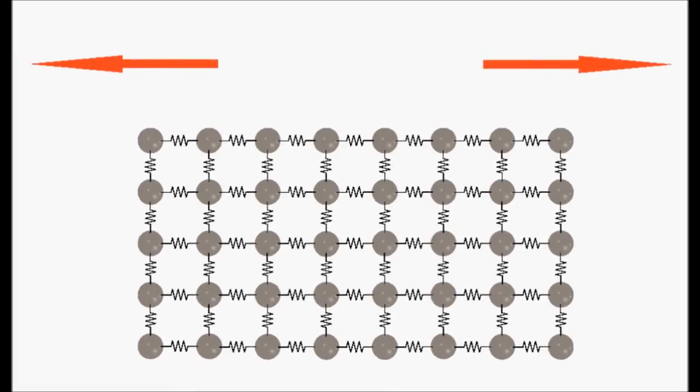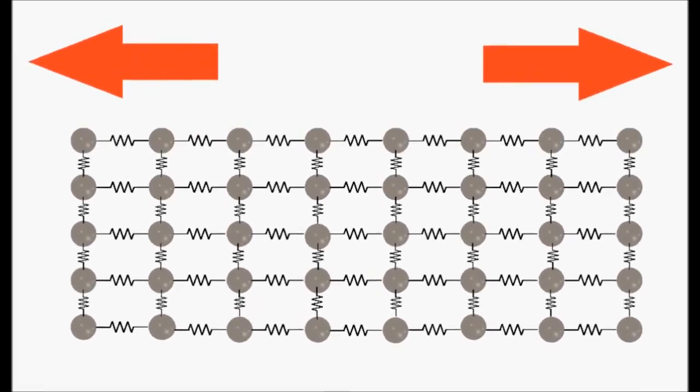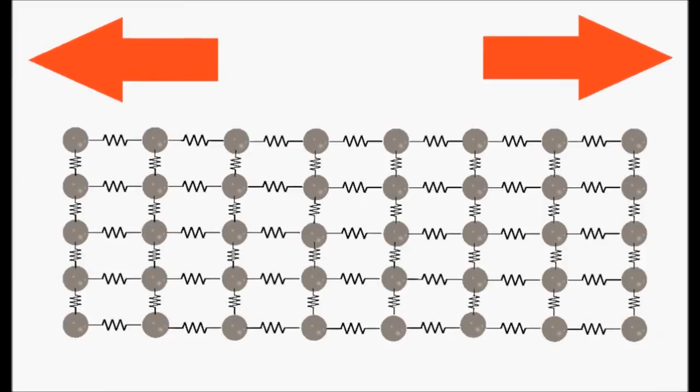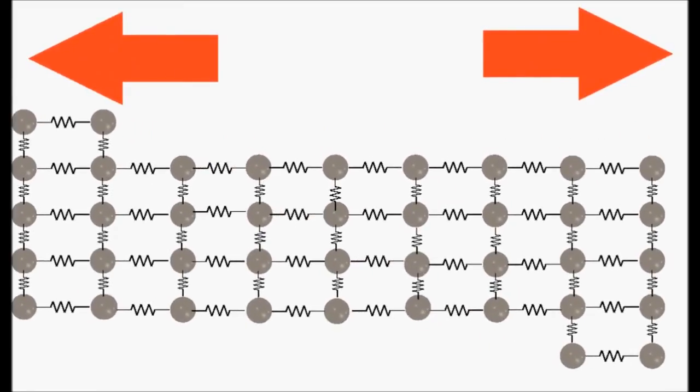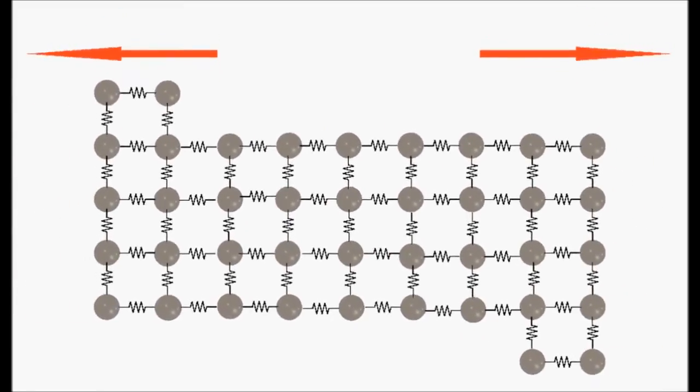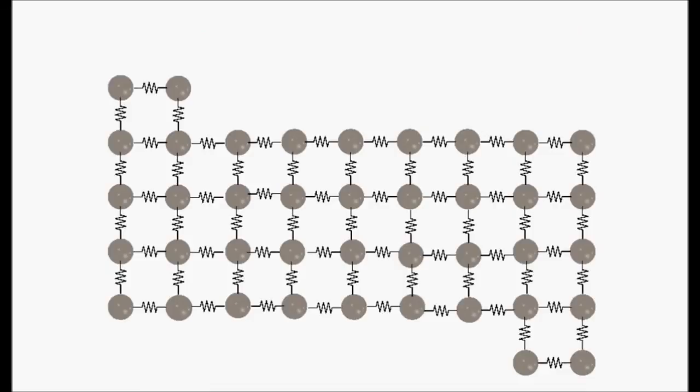However, if we continue to apply the stress and the crystal is ductile, it will have to deform plastically, meaning it will have permanent deformation. The tension at which deformation starts is the yield strength, and it's not only depending on the chemical bonding.